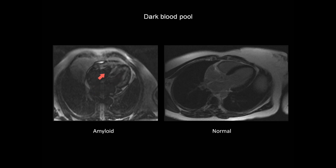That's a feature which is very suggestive of the presence of cardiac amyloidosis. Why does this happen? Well, gadolinium binds to the amyloid protein in the body, and as a result it is drawn out of the blood pool relatively quickly, so the blood pool appears darker than normal.